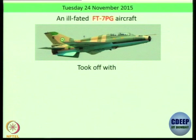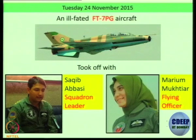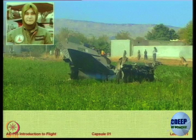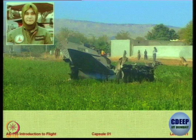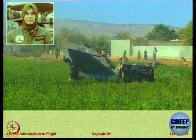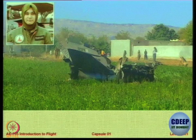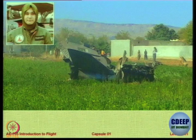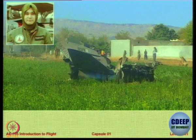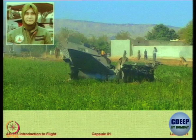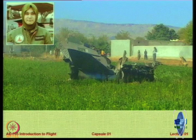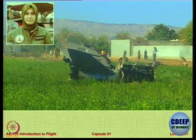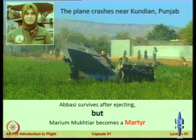The aircraft took off with one senior leader as teacher and Mariam Mukhtiar as flying officer. There was a crash, and she could have saved her life by ejecting early, but she decided to divert the plane away from a populated area — the aircraft was heading toward a school. Her captain ejected and survived, but she ejected late and gave her life for the welfare of the people on the ground. She became the first martyr of this kind.